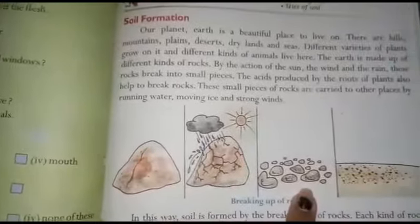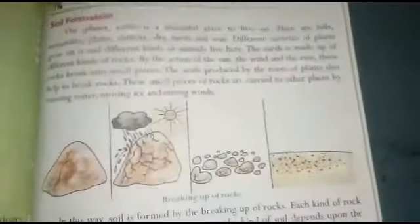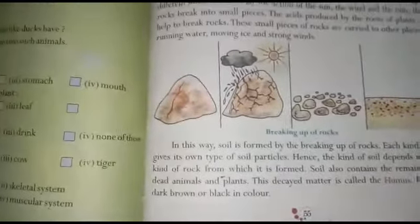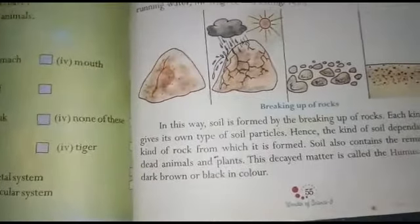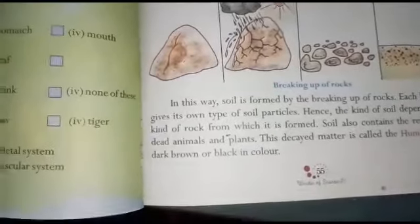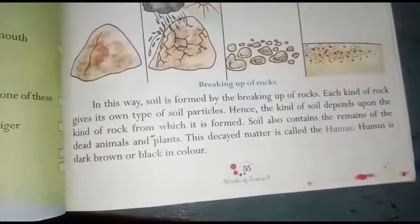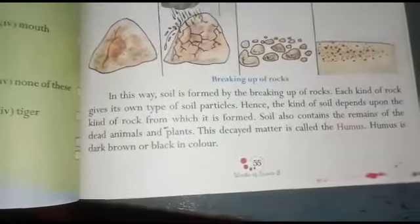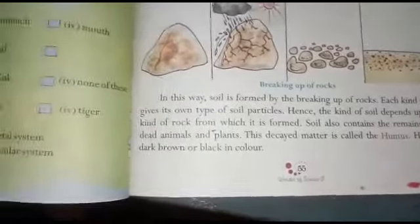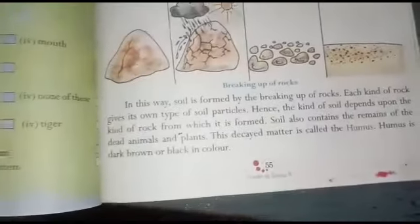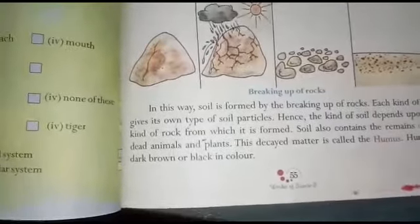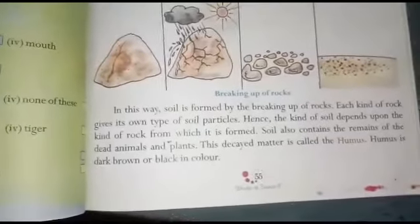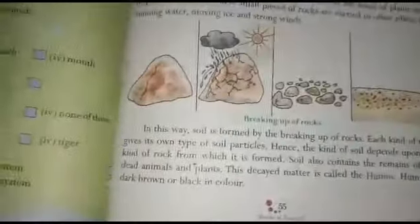Soil is formed by the breaking of rocks. Each kind of rock gives its own type of soil particle; hence the kind of soil depends upon the kind of rock from which it is formed. Soil also contains the remains of dead animals and plants. This organic matter is called humus. Humus is dark brown or black in color.